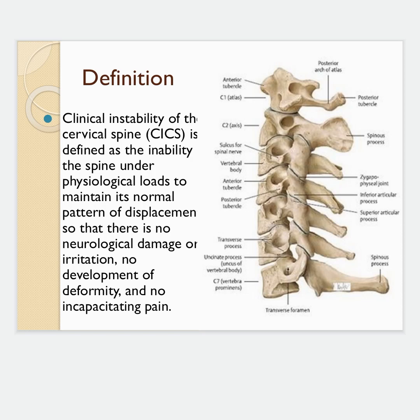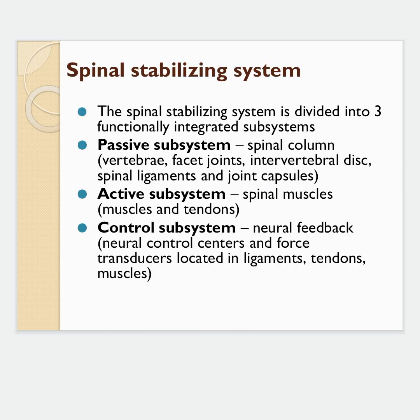Regarding the spinal stabilizing system, the cervical spine has mobility that can compromise its stability. The cervical region is the most mobile region, meaning its stability is reduced compared to other regions. The spinal stabilizing system is divided into three subsystems. The first is the passive subsystem, which includes vertebrae, facet joints, discs, spinal ligaments, and joint capsules.